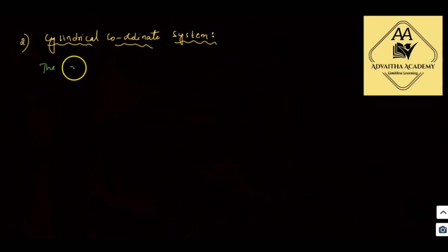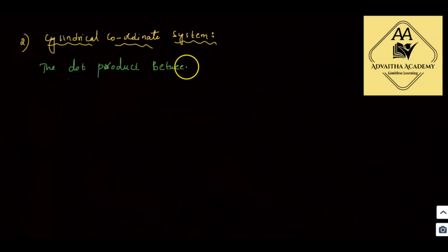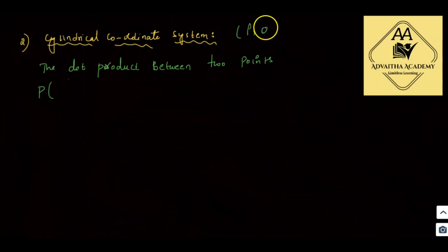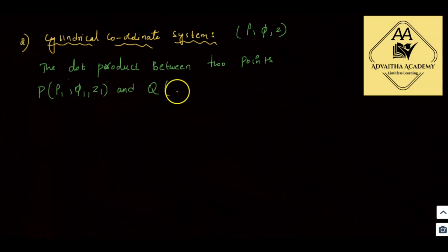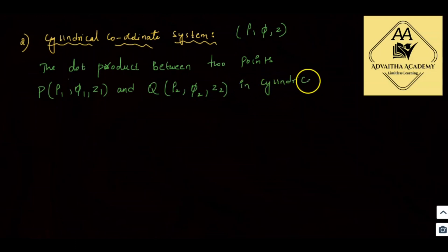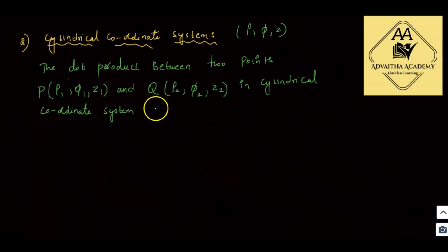The dot product between two points in the cylindrical coordinate system — where a point is represented as (rho, phi, z) — so point P is (rho1, phi1, z1) and point Q is (rho2, phi2, z2). In the cylindrical coordinate system, this is given by: